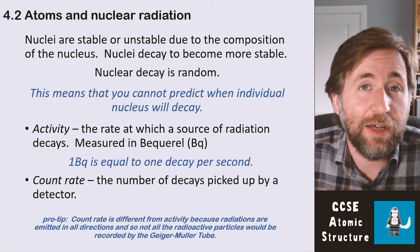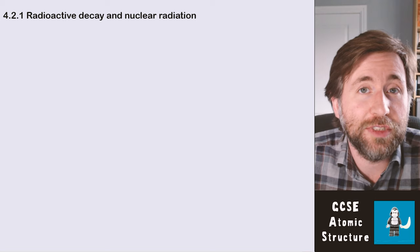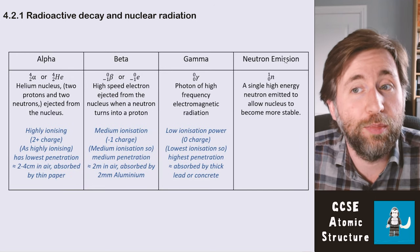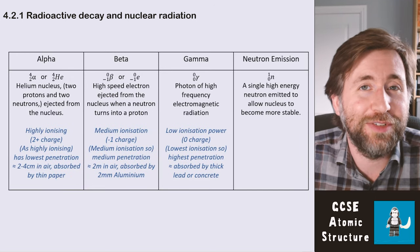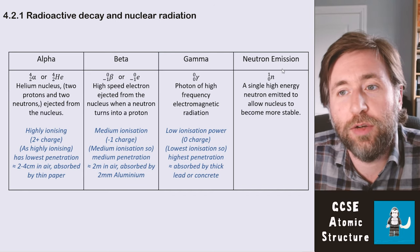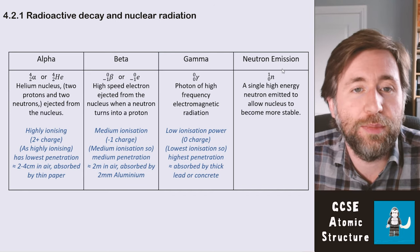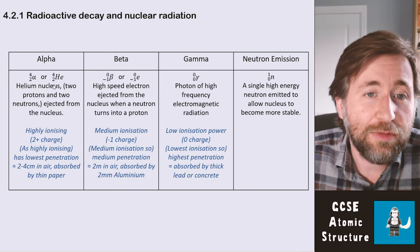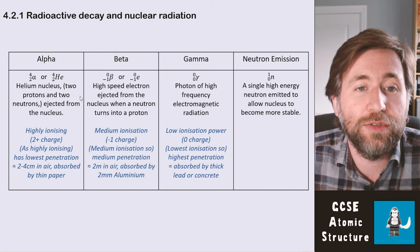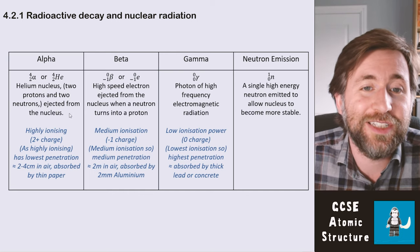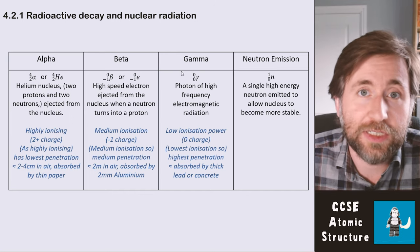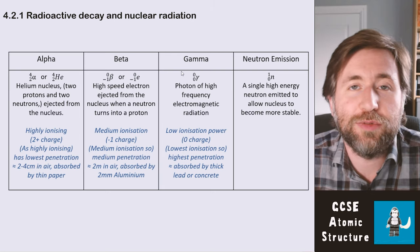Radioactive decay comes in three — and then one bonus — categories: alpha, beta, and gamma, but you also need to know what neutron emission is. Alpha is a helium nucleus — that's two protons and two neutrons — and it's ejected from the nucleus. All of these things come from the nucleus of atoms, and that's what makes them nuclear radiation.